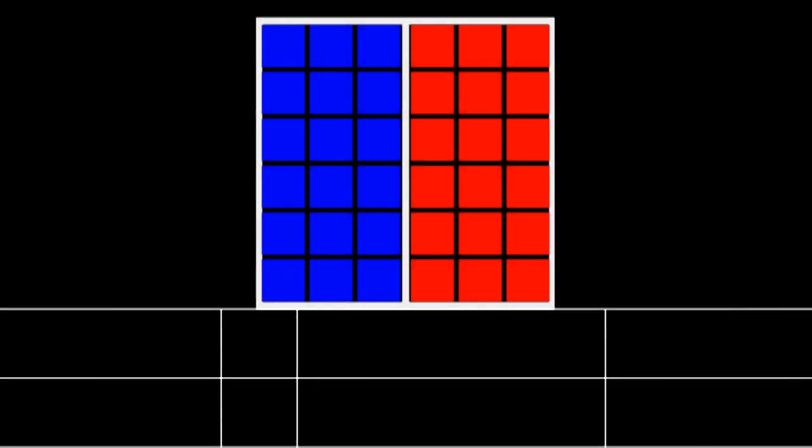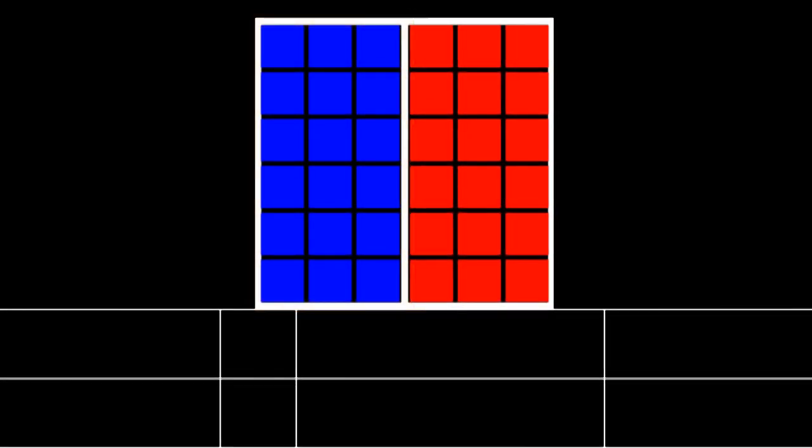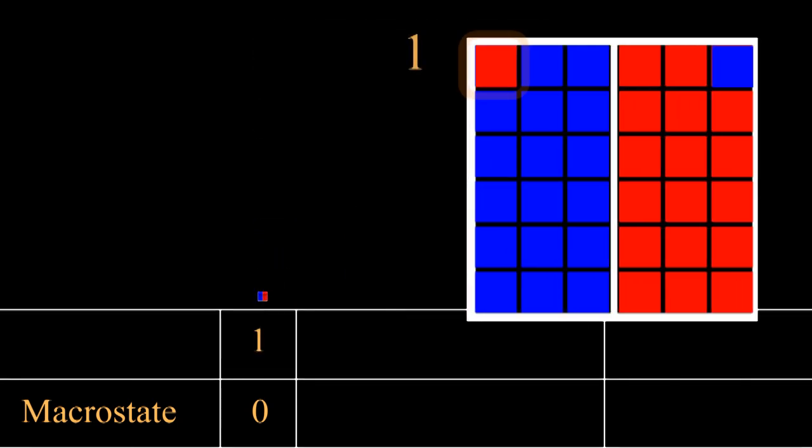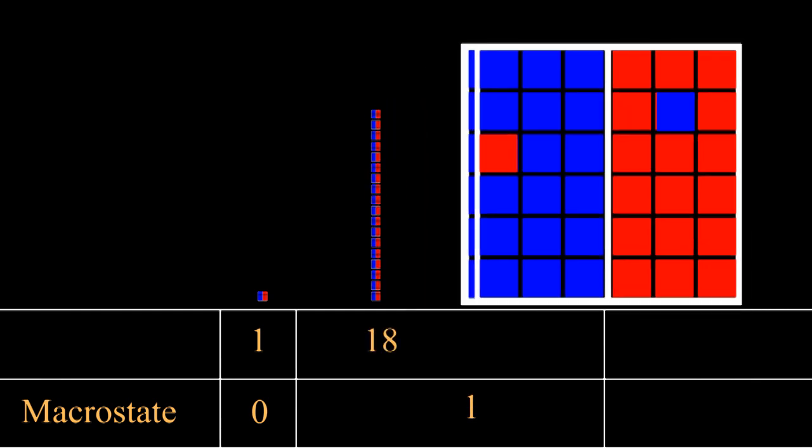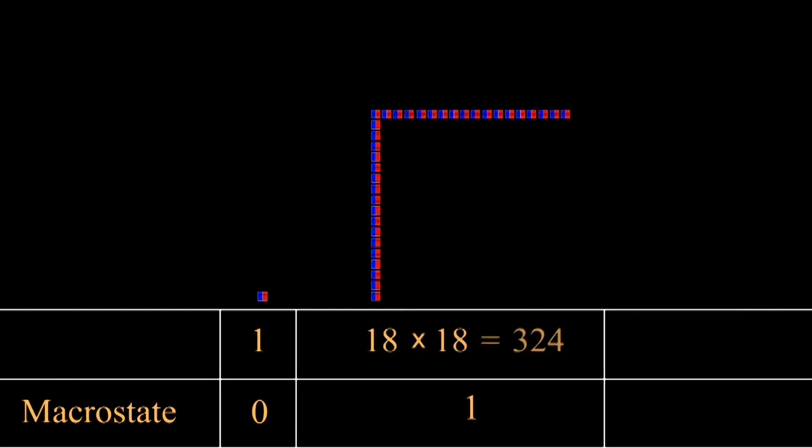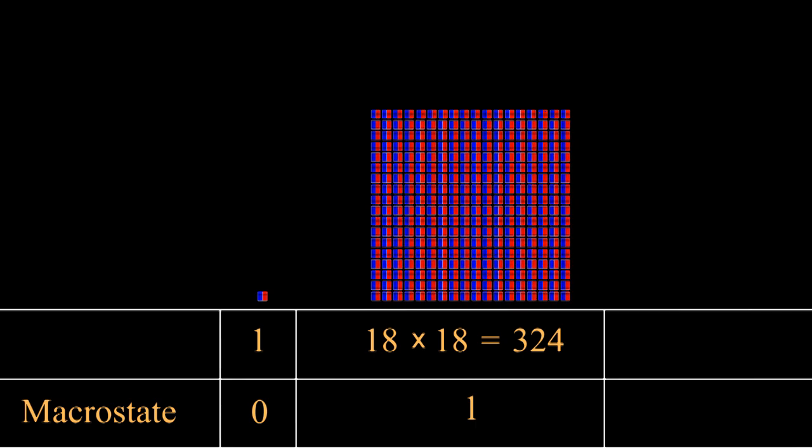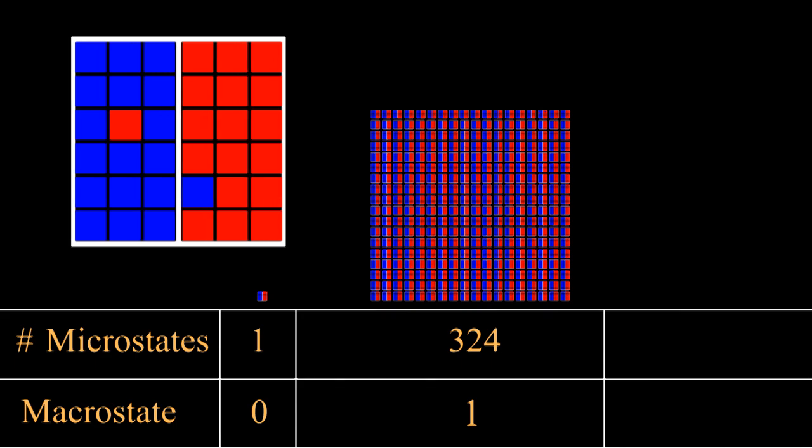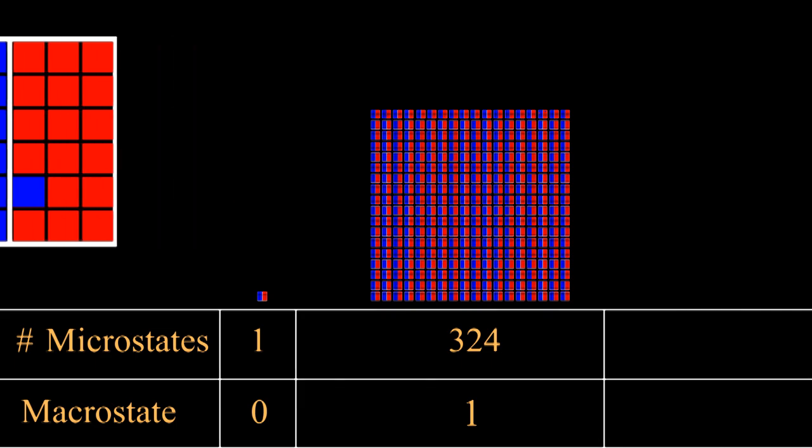How many possible ways can there be zero red cubes on the left? There's just one. Now, how many possible ways can there be one red cube on the left and one blue cube on the right? There are 18 spots for red cube and 18 for the blue cube. So that's 18 times 18 equals 324 possibilities. We'll call each of these possibilities a micro state. There are 324 micro states for a macro state of one, since we have one red cube on the left.